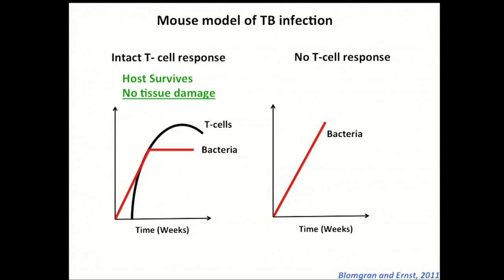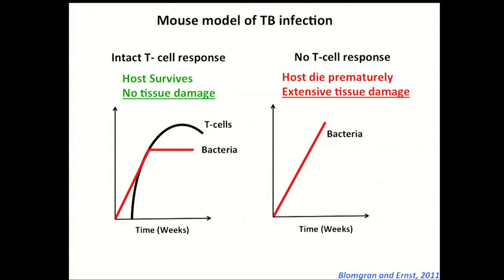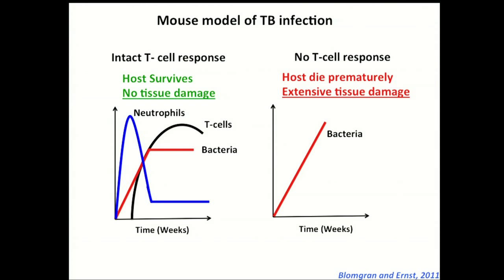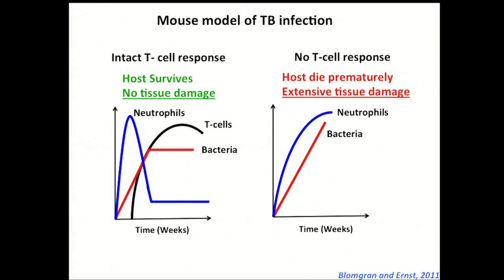On the contrary, mouse strains which lack T cells, either genetically deficient or with an impaired T cell response, the bacteria grow uninhibited and the host dies prematurely owing to extensive tissue damage. Not only does the presence of T cells dictate disease outcome, but if you look at cellular infiltration in the presence of T cells, neutrophils first come in and once the T cell response starts, neutrophils go down drastically. Whereas in the absence of T cells, neutrophils are persistently elevated in the lungs. Neutrophils, though essential for controlling TB, are a potential source of proteolytic enzymes and reactive oxygen intermediates, so they can cause inadvertent damage to the host tissue.